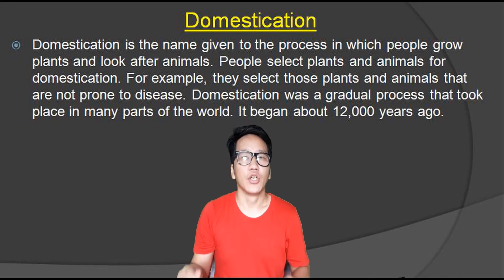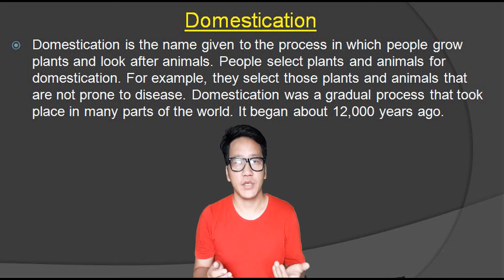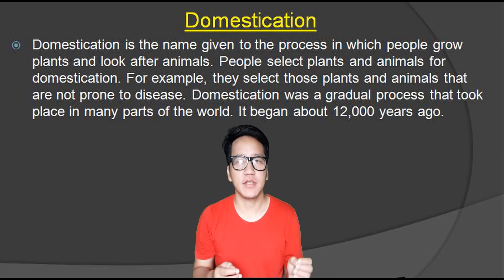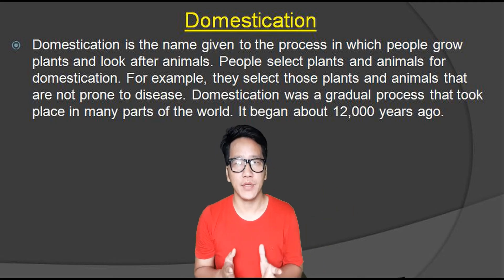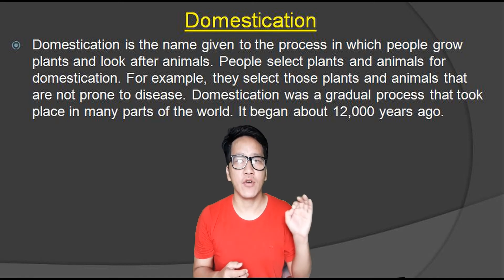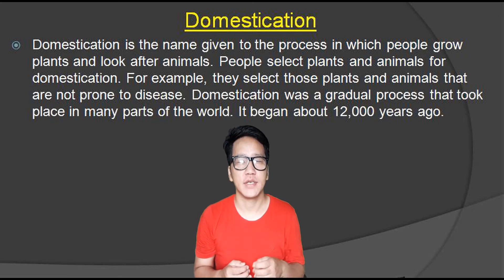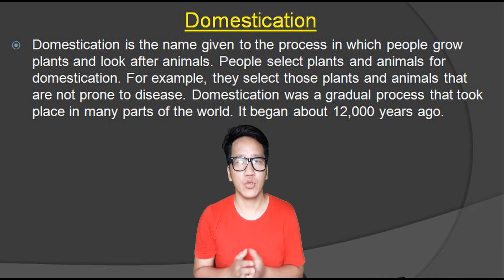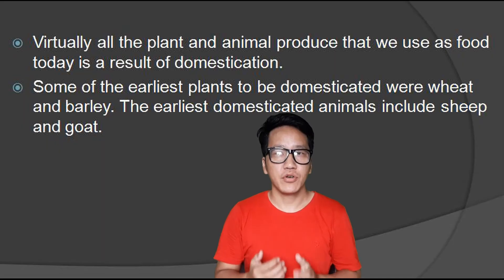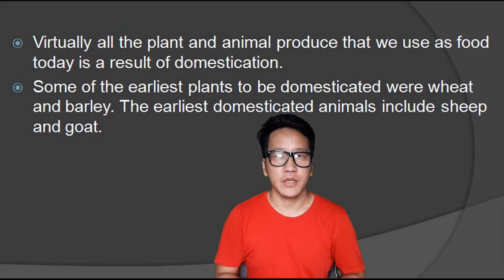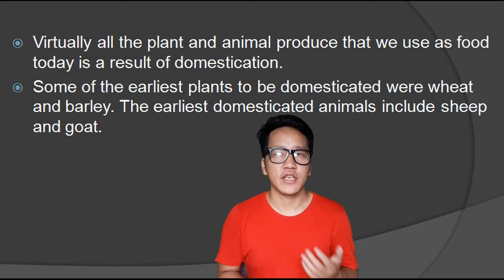Domestication is the name given to the process in which people grow plants and look after animals. People selected plants and animals for domestication many years ago. For example, they selected those plants and animals that were not prone to disease. Domestication was a gradual process that took place in many parts of the world. It began about 12,000 years ago. Virtually all the plants and animals we use as food today are a result of domestication.